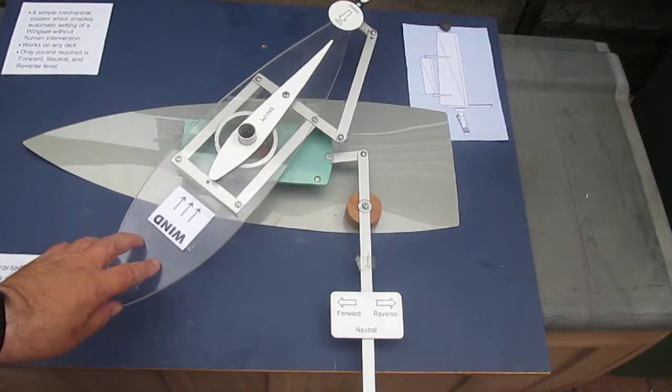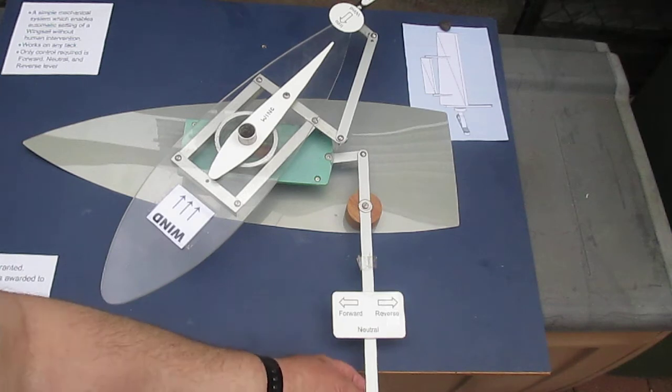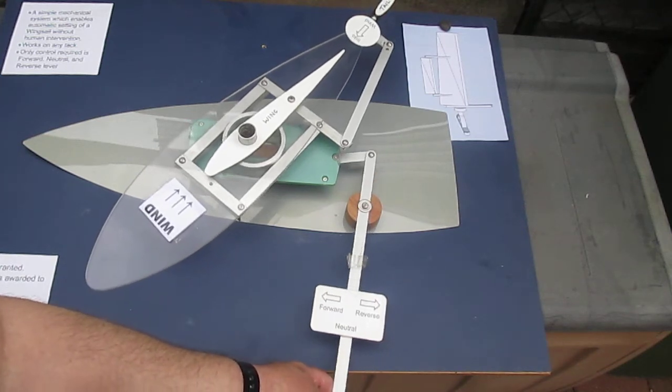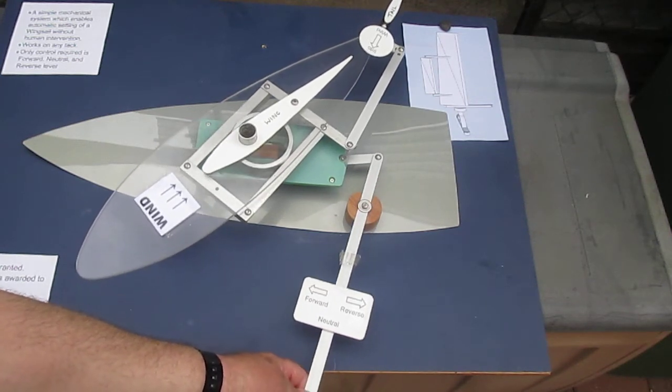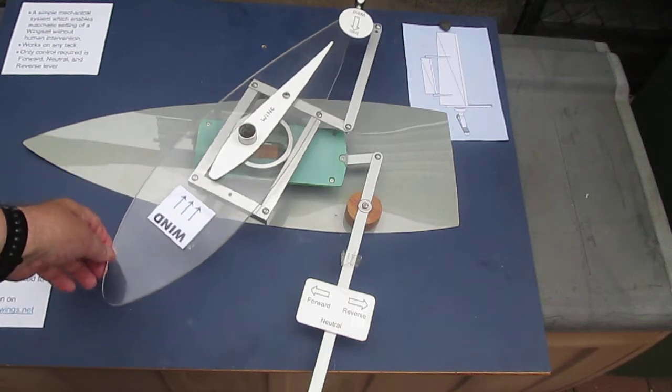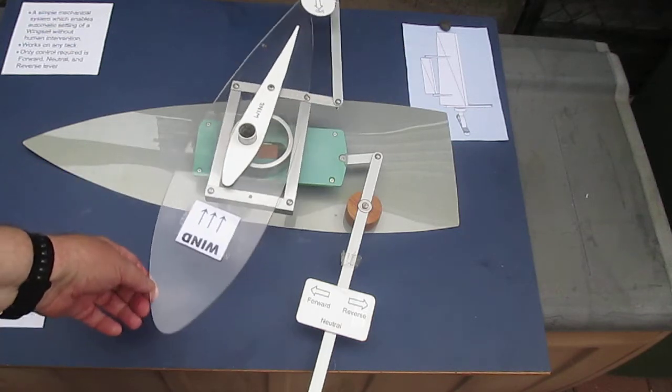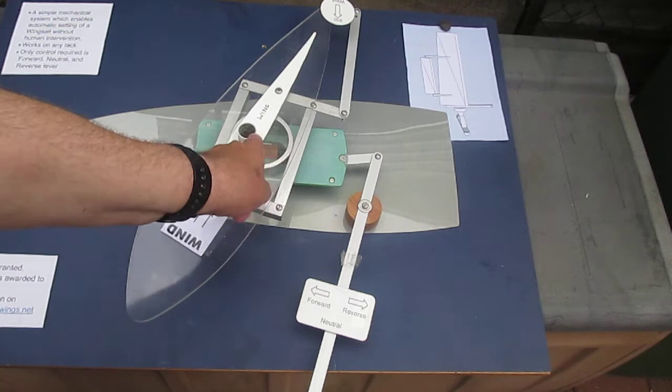Now supposing we want to go forward, then we move this lever forward in a forward direction, and as you see, the tail now adjusts the wing to give forward thrust.